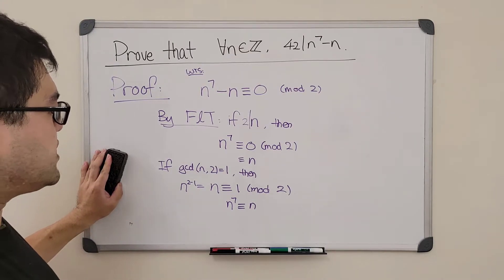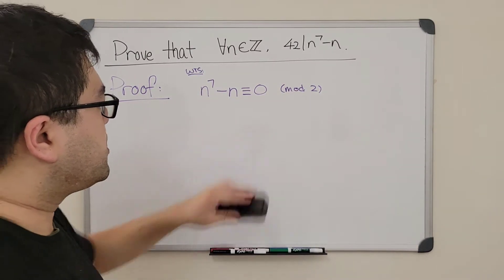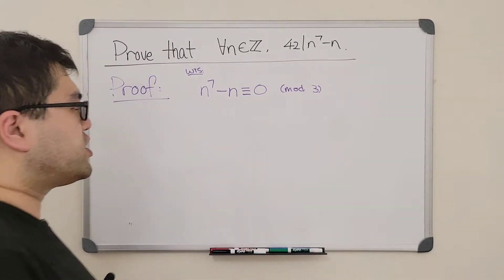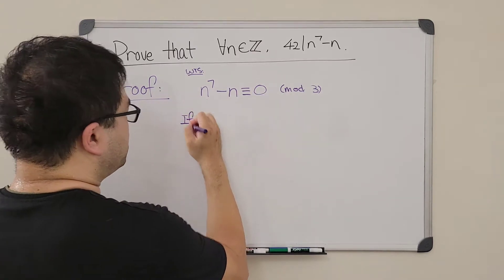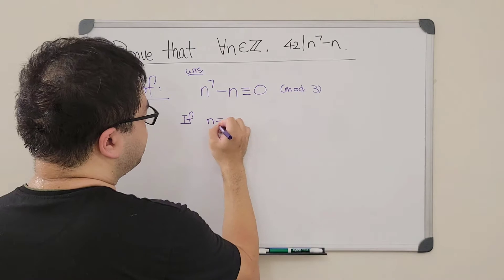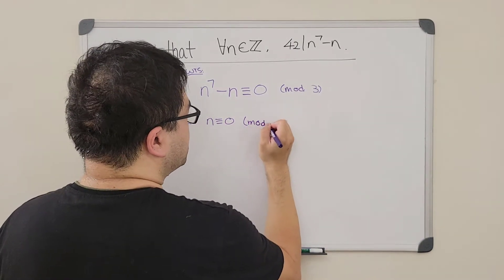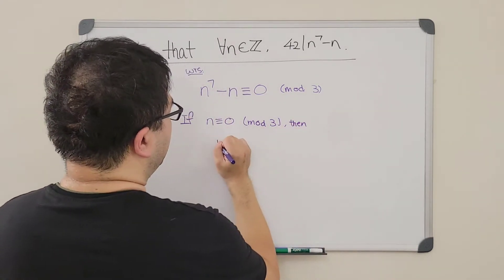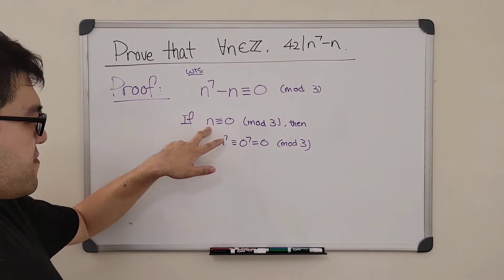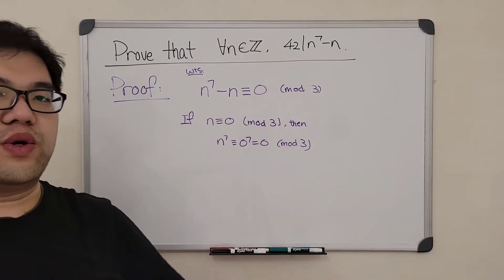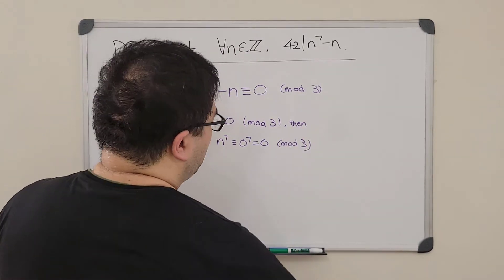So we've finished the first part: n to the seventh power minus n is always a multiple of 2. Next we show that the expression is congruent to zero mod 3, i.e., a multiple of 3. We split into two cases. If n is a multiple of 3, then n is congruent to zero mod 3, so n to the seventh power is congruent to zero to the seventh power, which is zero mod 3. We note that if n is a multiple of a prime p, then no matter what power you raise n to, you always get zero back mod p.